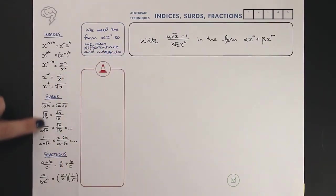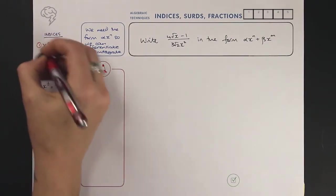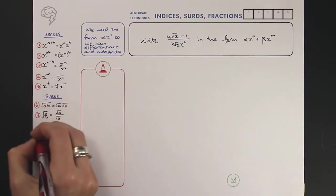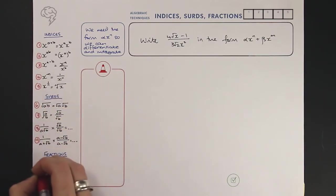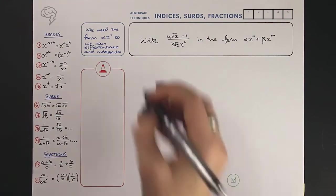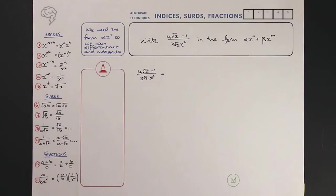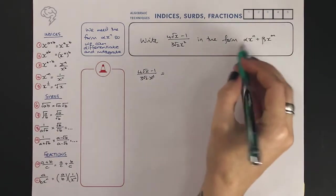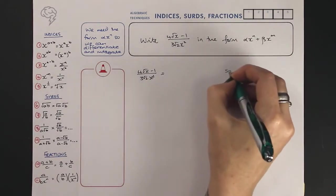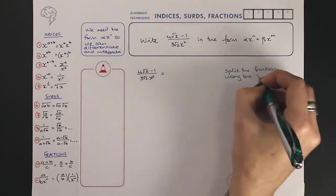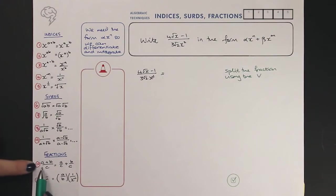We're going to be using nearly all of these rules down here, so let's number them so we can reference them. Starting off with the question in the form it's written, first thing we're going to do is split the fraction into two different parts. This is going to be using the v, which is number 10 down here.